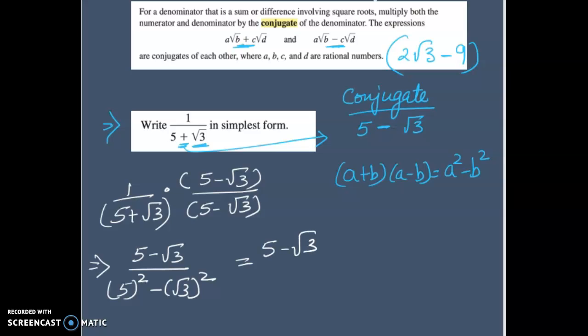So this will be 5 squared minus radical 3 squared. A squared minus b squared. Simplify it again. 5 minus radical 3, 5 times 5 is 25. And again, no index is given to you, that means it is a square root. And the square root and the exponent, they will cancel off each other. And we will be left with only 3. Simplify it further, 5 minus radical 3 over 25 minus 3 is 22. And I am done.